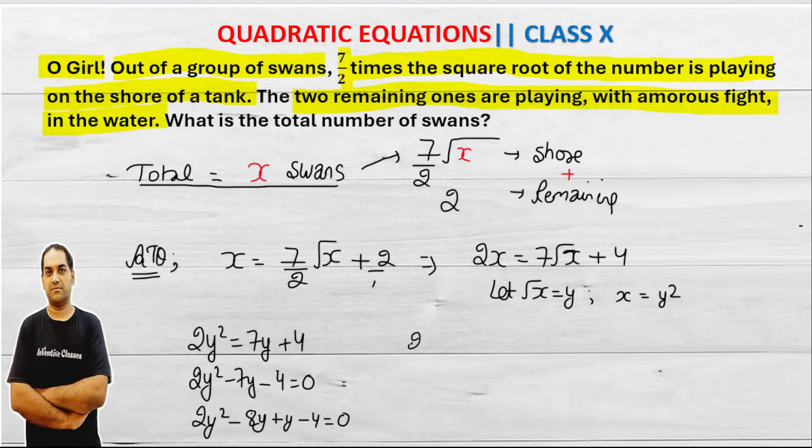And if I take 2y common from here, then this becomes y minus 4 plus 1 times y minus 4 equals 0.